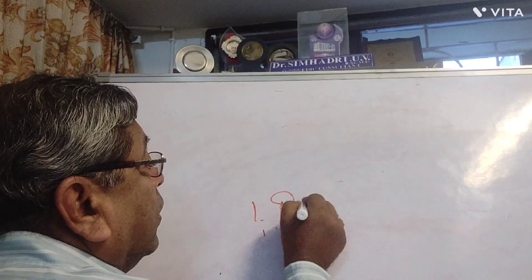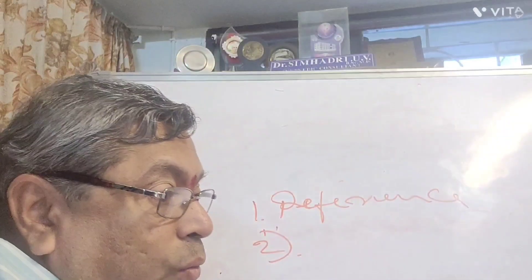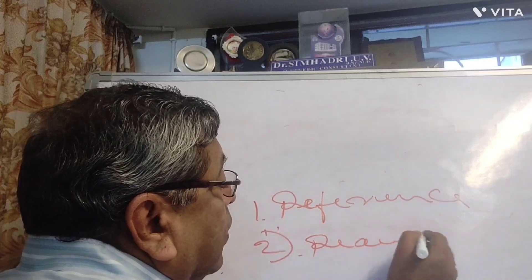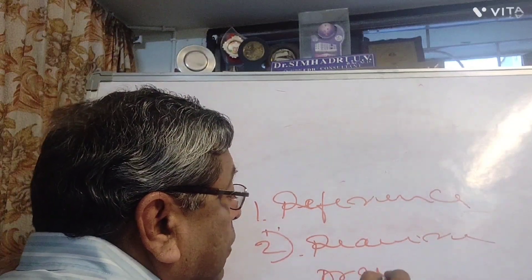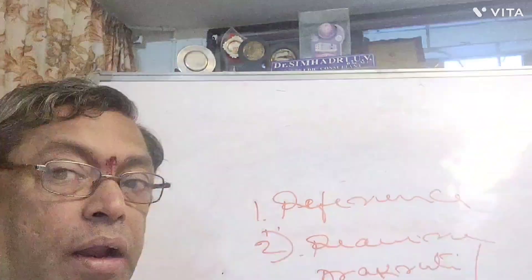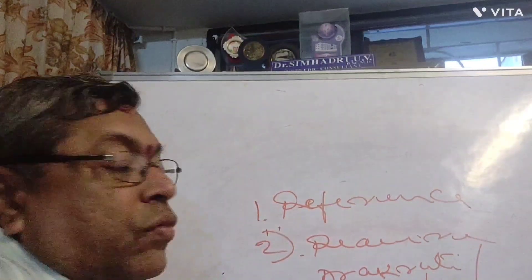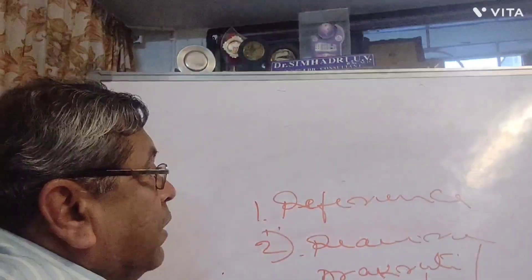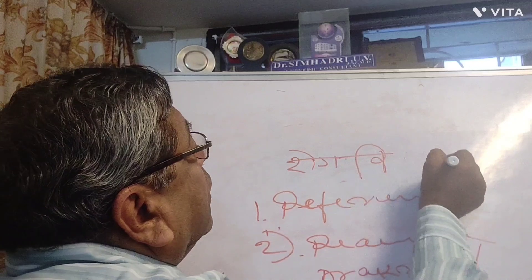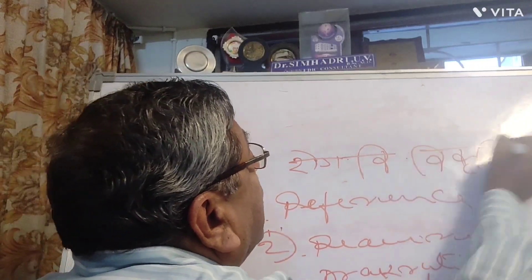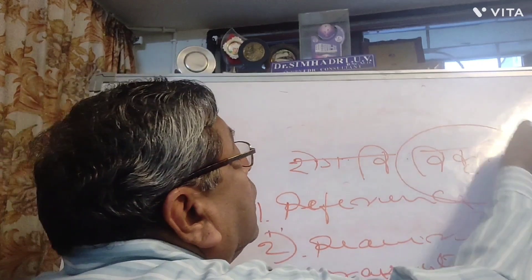Number two — according to requirement, we are selecting the drugs. What is requirement here? By taking the Prakruti of the person and the pathology out of the patient, in Ayurveda we are calling it Roga Vignana and Vikruti Vignana. In modern science they are calling it pathology, but we are calling it Roga Vignana.